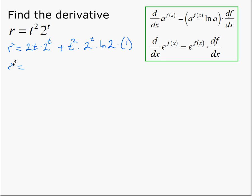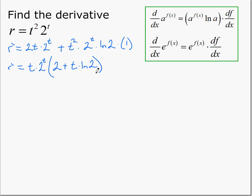For the final simplified answer, the best we can do is factor out anything that's common. In this case we factor out t times 2 to the t, leaving 2 plus t ln 2 inside. And that's our final simplified answer.